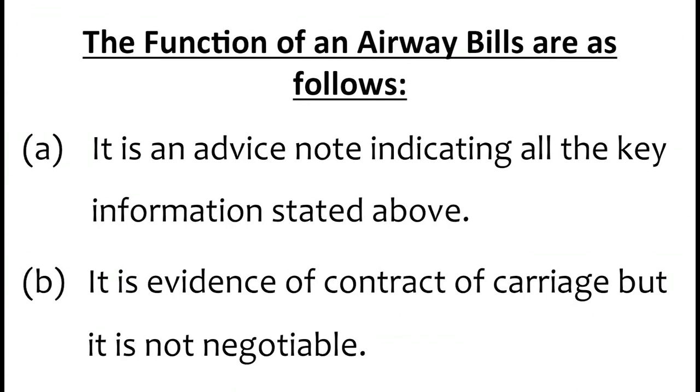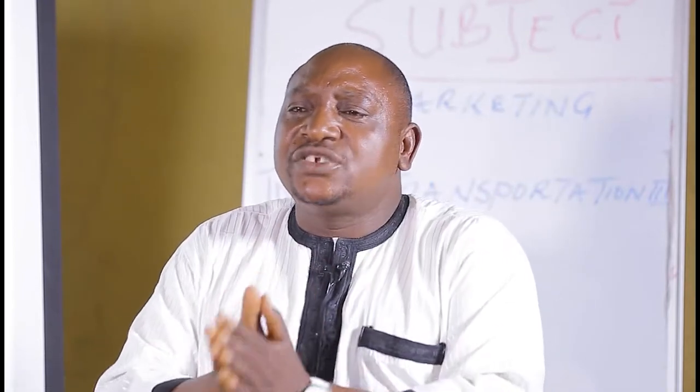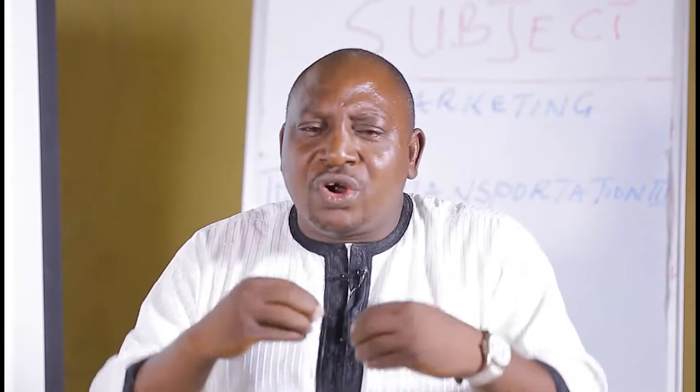Now let's look at the functions of an airway bill. One, A: it is an advice note indicating all the key information stated above. It tries to bring a relationship that the shipper and the beneficiary will understand. There is a particular advice note that the shipper takes along with him on how he is going to transport these products through the air, and there is certain information written on it that will serve as a guide to the shipper.